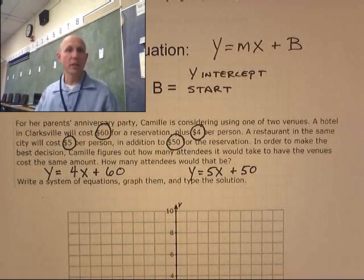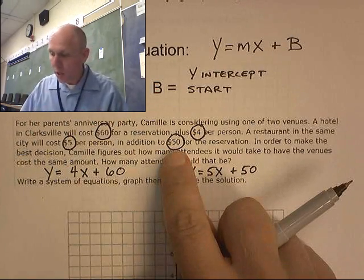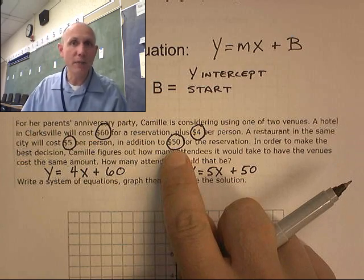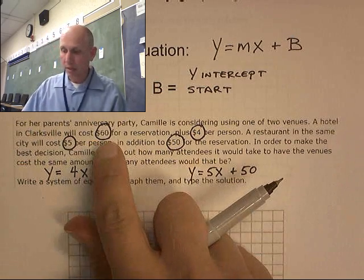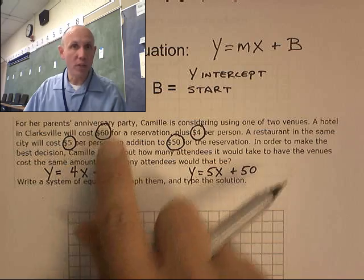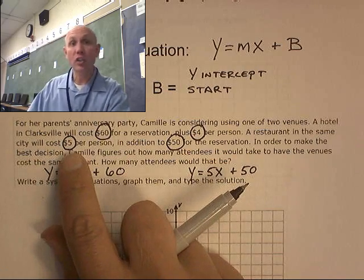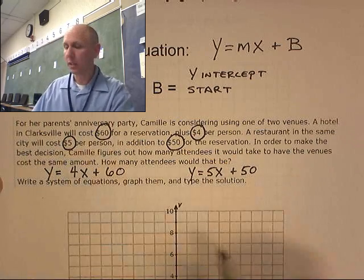Those are your two equations. The starting value. You have to pay $50 even if nobody shows up to the party. You have to pay $60 even if nobody shows up. And then the cost changes as people show up. So, let's graph this.